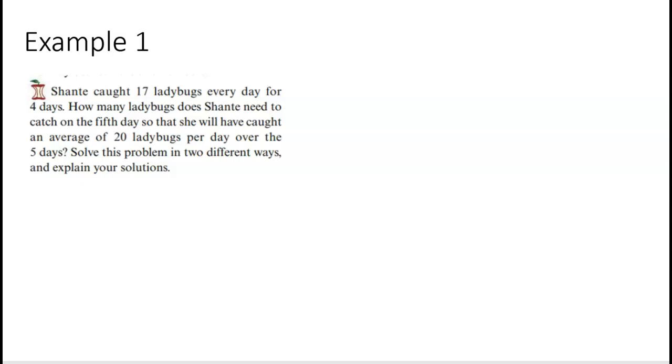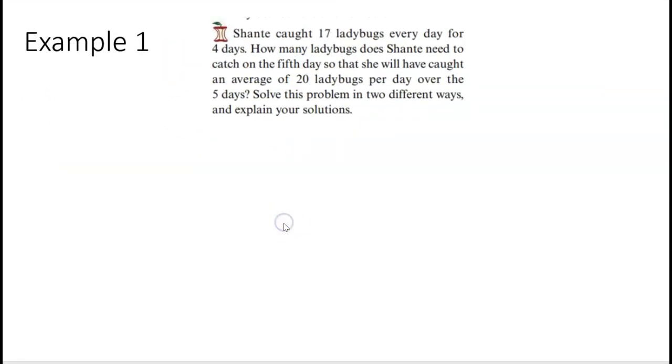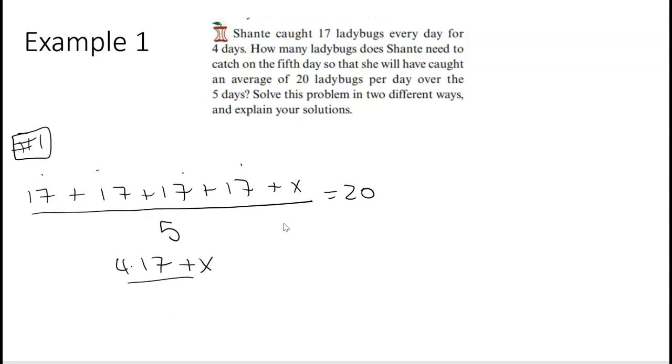Let's do some examples. Shantae caught 17 ladybugs every day for four days. How many ladybugs does Shantae need to catch on the fifth day so that she will have caught on average 20 ladybugs per day over the five days? Solve this problem in two different ways and explain your solutions. Let's solve this in our first way, maybe without any pictures. We know that the mean—she did for four days, she got 17. So 17 plus 17 plus 17 plus 17, day one, two, three, four, and we don't know the fifth day, but we know it's going to be over five days, and we know we want the mean to be 20. So we could add that up: four times 17 plus x over five equals 20. Then we would multiply by five, so that would be 68 plus x equals 100. Subtract 68 from both sides: x equals 32. So she has to catch 32 ladybugs on her fifth day.